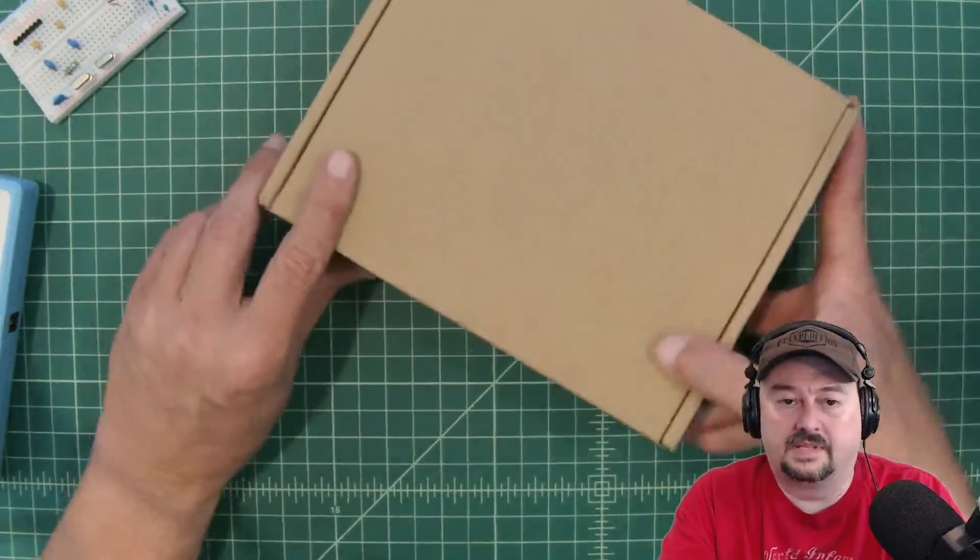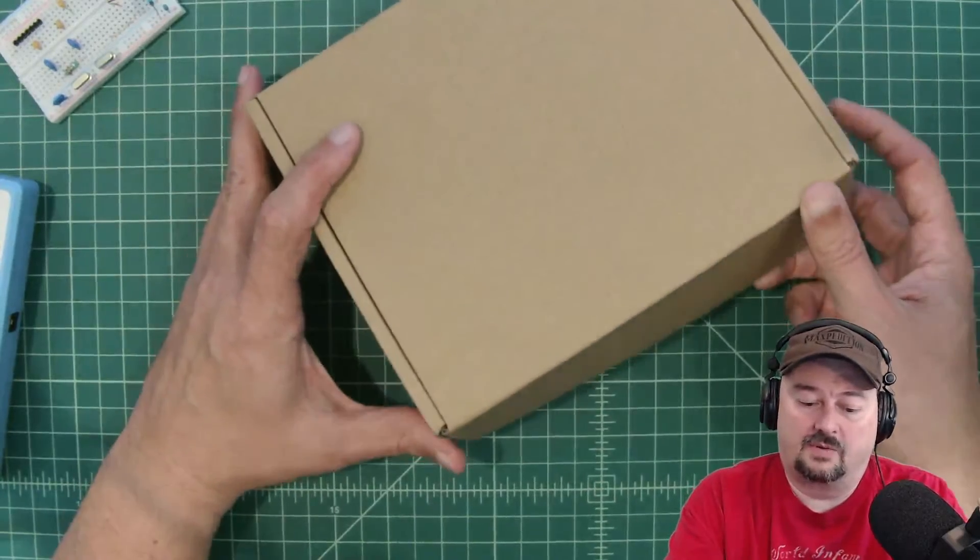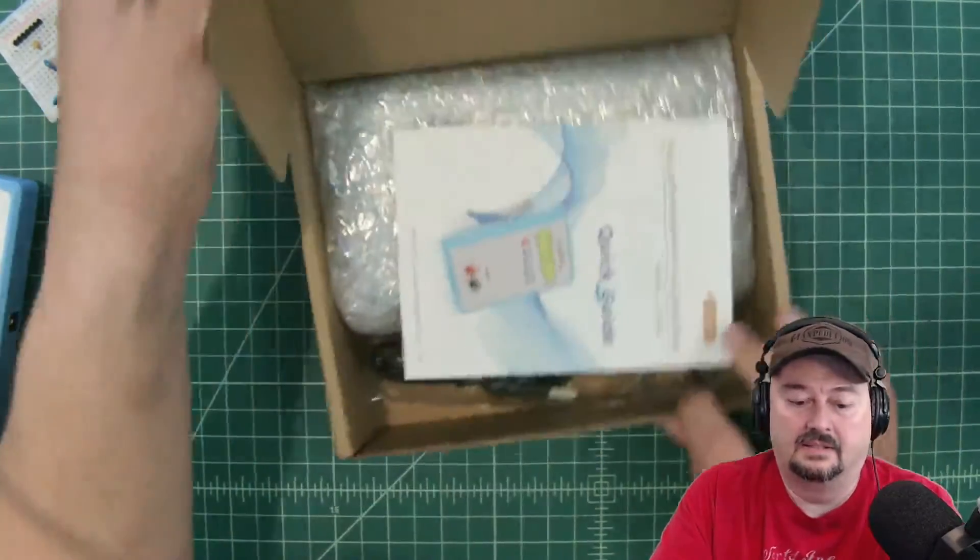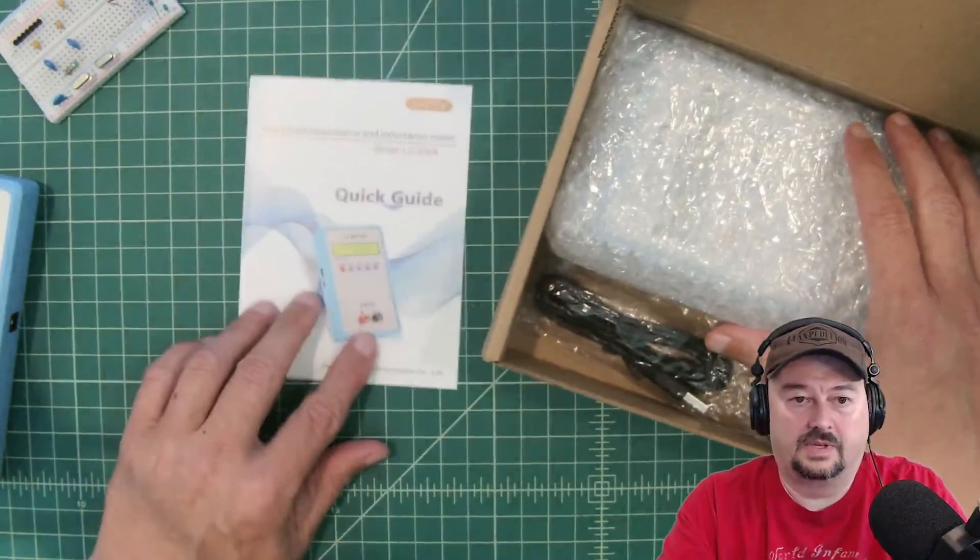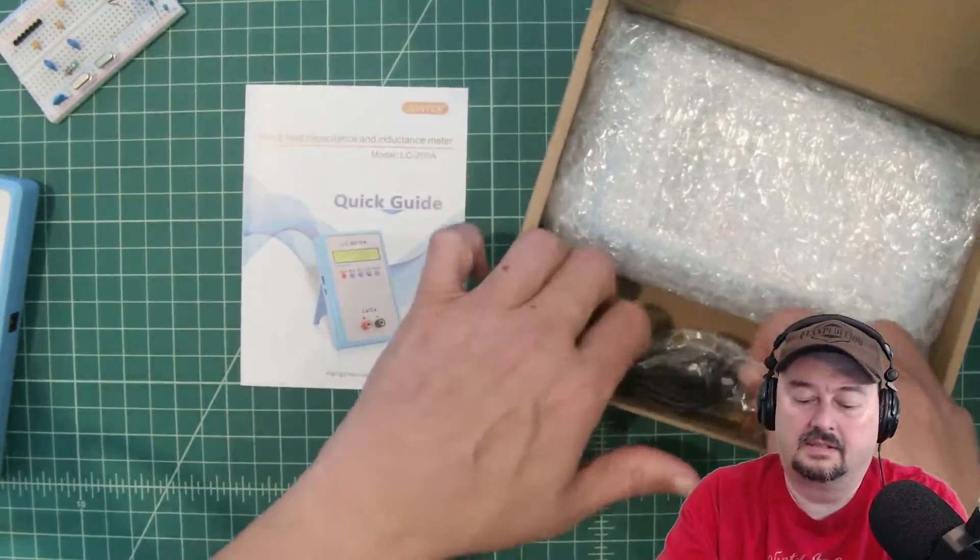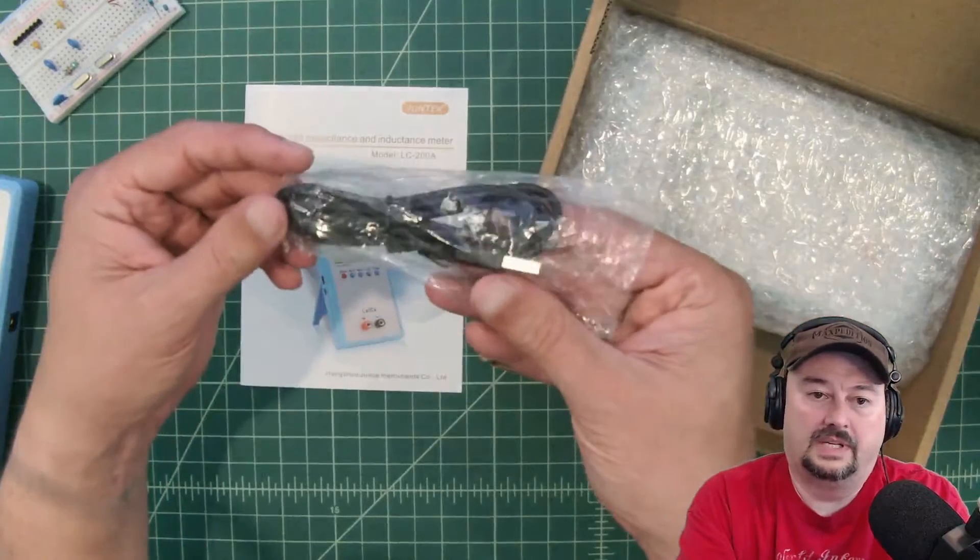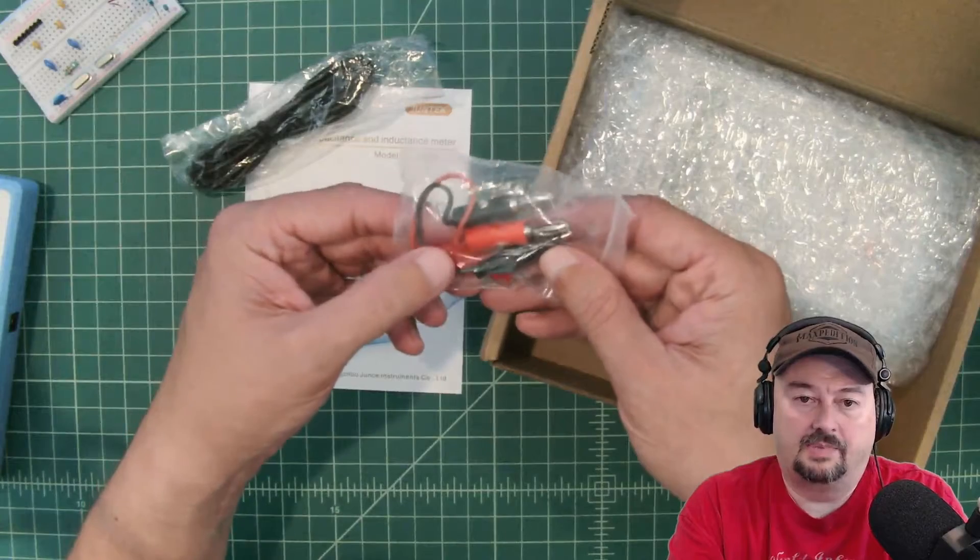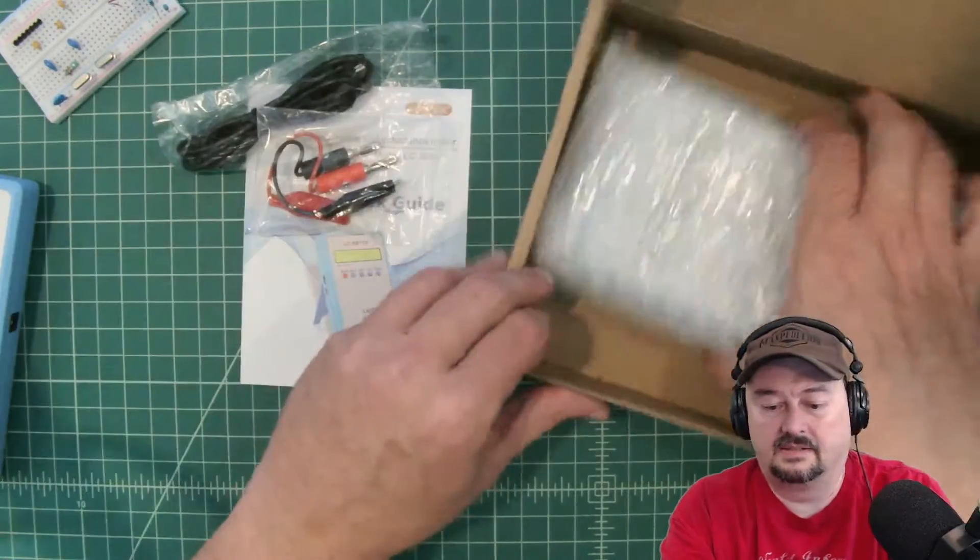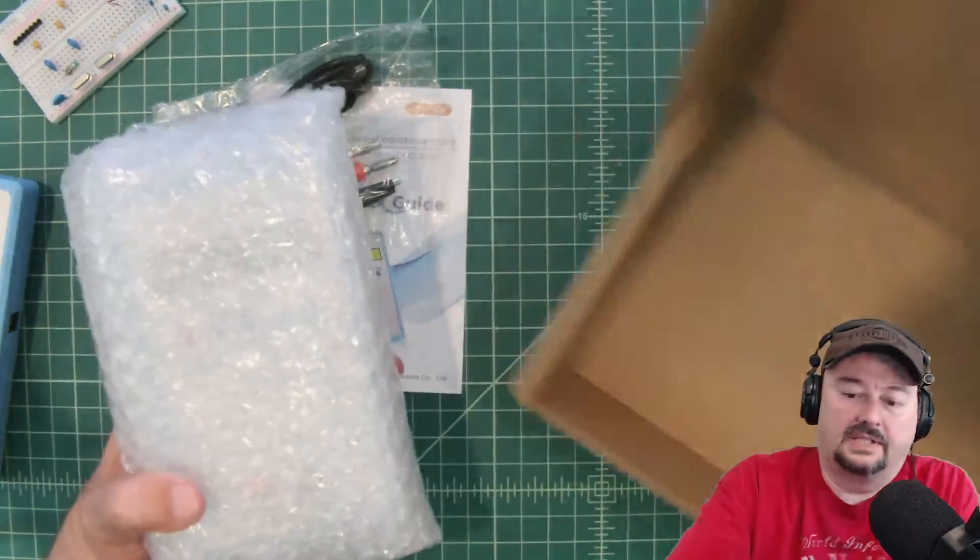All right, well, let's see what comes in the box when you buy this. And we're going to do this quickly so it's not an unboxing. And it looks like we get an instruction manual, which would be our quick start guide. Looks like we get a USB cable. You can power this off this USB cable. And then you get a couple of these test leads. And that looks like it's it.